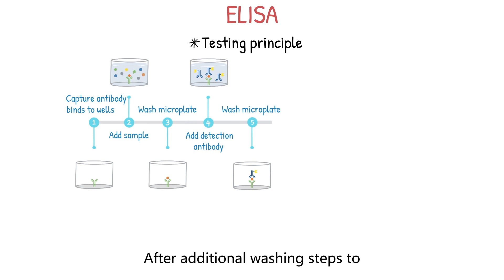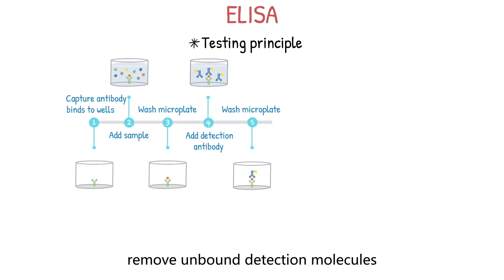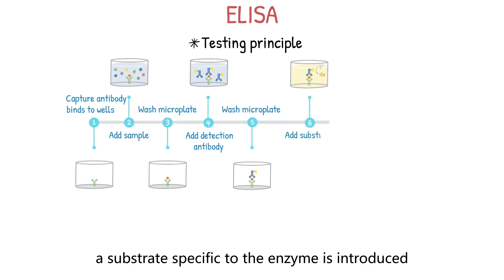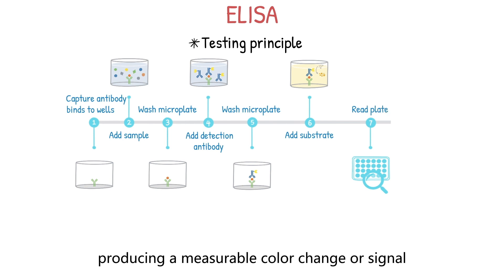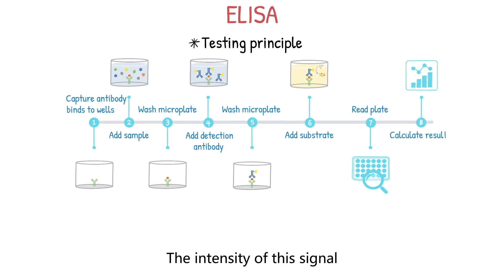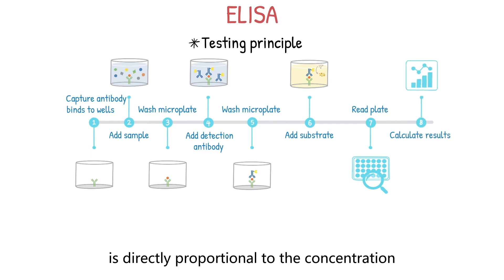After additional washing steps to remove unbound detection molecules, a substrate specific to the enzyme is introduced. The enzyme catalyzes a reaction with the substrate, producing a measurable color change or signal. The intensity of this signal is directly proportional to the concentration of the target molecule in the sample.